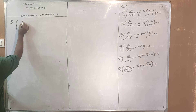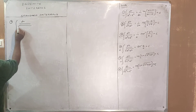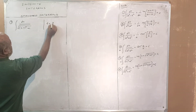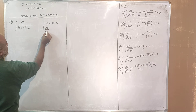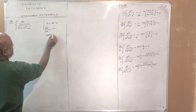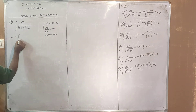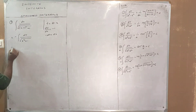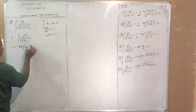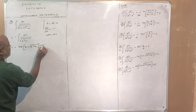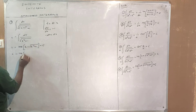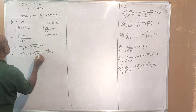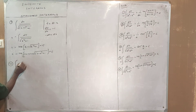Next one: integral of dx divided by root of (2 minus x) whole square plus 1. Here t is equal to 2 minus x, so dt divided by dx equals minus 1, giving dt equals minus dx. Therefore the integral becomes minus dt divided by root of t squared plus 1, which equals minus log of (2 minus x) plus root of (2 minus x) squared plus 1, plus C.